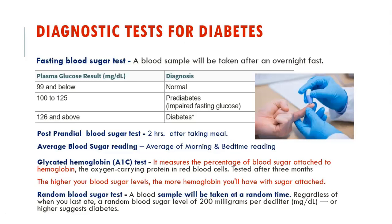The fourth test is the glycated hemoglobin test, or HbA1c, which indicates the average blood sugar level for the past 2 to 3 months and is tested every 3 months. It measures the percentage of blood sugar attached to hemoglobin — the higher the blood sugar level, the more hemoglobin has sugar attached to it. The random blood sugar test takes a blood sample at a random time regardless of when you last ate; a random blood sugar level of 200 mg per deciliter or above is considered diabetes.